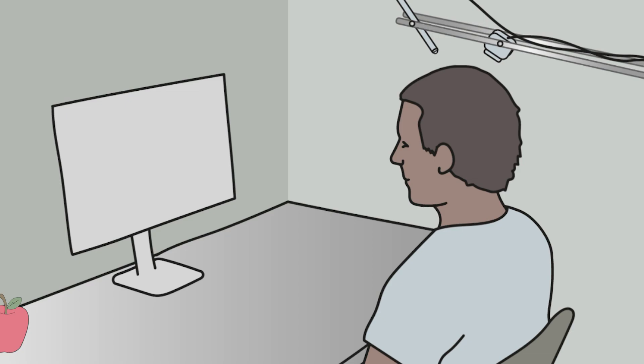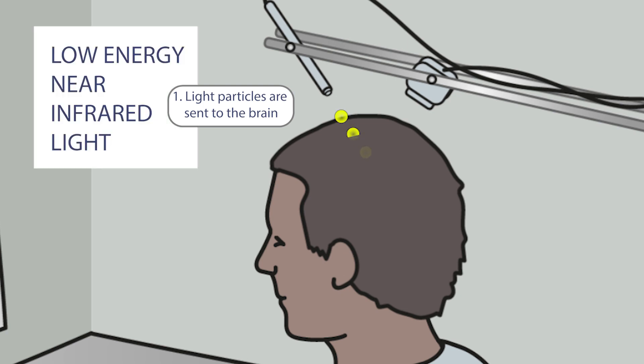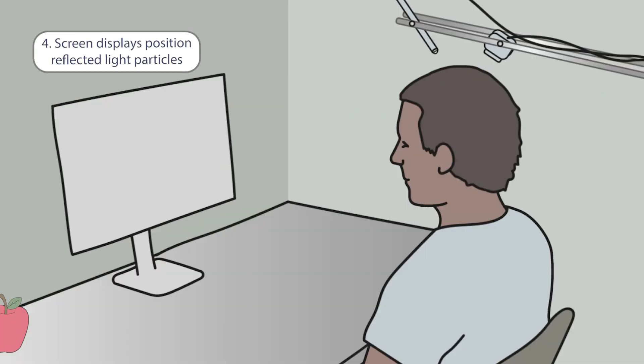A participant is sitting in front of a screen. Light particles are sent to the brain. We use low energy near-infrared light, which is widely used and known to be safe. The brain reflects the light particles, the camera records it, and the screen displays the position of the reflected particles.